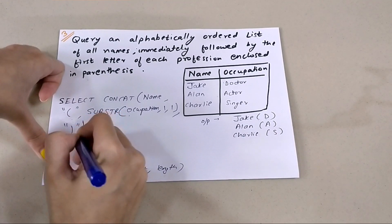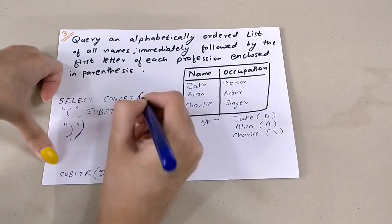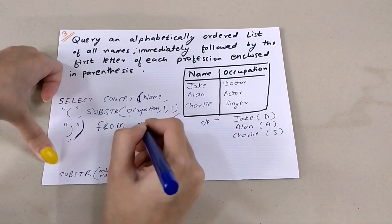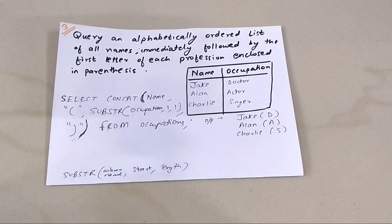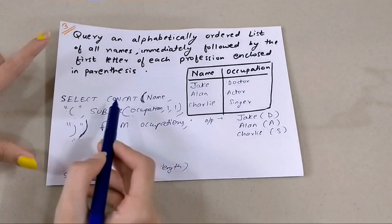We're going to close this CONCAT. Whatever you want to print will be in this CONCAT, and then FROM whatever the table name is. For example, the table name is Occupations. So this is the answer - we use CONCAT and SUBSTRING.